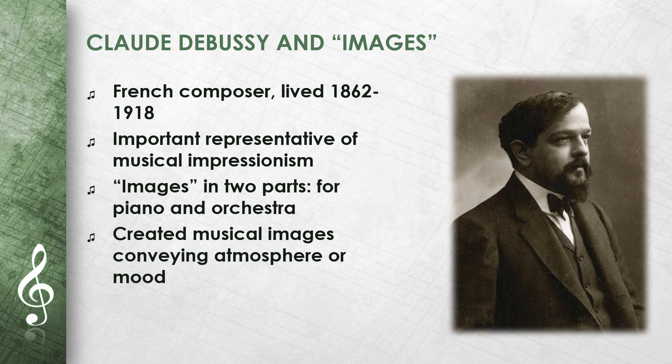His work Images consists of two parts: Images pour piano and Images pour orchestre. He wrote Images pour piano between 1905 and 1907, while Images pour orchestre was composed between 1905 and 1912. In both parts, Debussy created musical images that convey a certain atmosphere or mood.